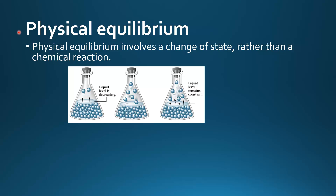In this video we look at physical and chemical equilibrium, starting with physical equilibrium. Physical equilibrium involves a change of state rather than a chemical reaction. Here we have an example: a liquid in a sealed flask begins to evaporate, and as the liquid evaporates the liquid level starts to decrease.